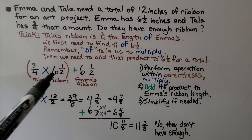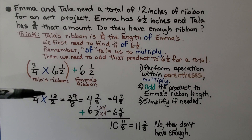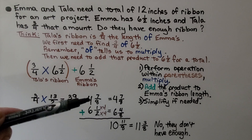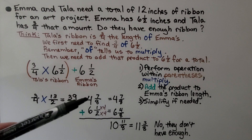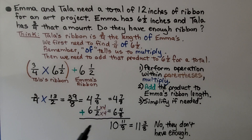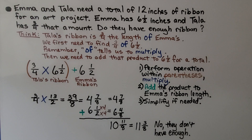We have three fourths times six and a half: six times two is twelve plus one is thirteen, so thirteen halves. No common factors, so we multiply straight across: three times thirteen is thirty-nine, four times two is eight — that's thirty-nine eighths, which simplifies to four and seven eighths for Tala's length. We add four and seven eighths to Emma's six and a half, converting to a common denominator of eight: six and four eighths. Seven plus four is eleven eighths, plus ten whole numbers gives ten and eleven eighths, which simplifies to eleven and three eighths. They needed twelve inches, but have only eleven and three eighths — so no, they don't have enough.